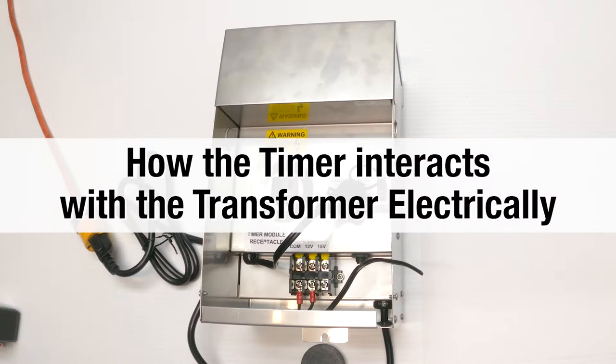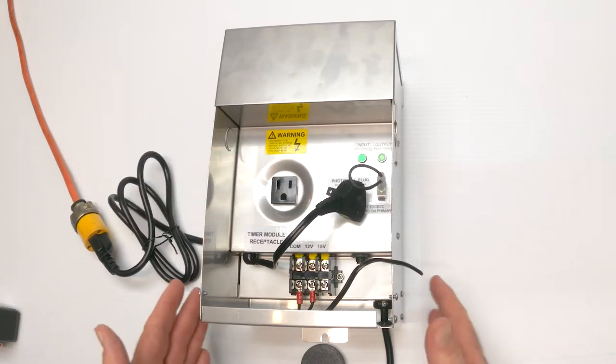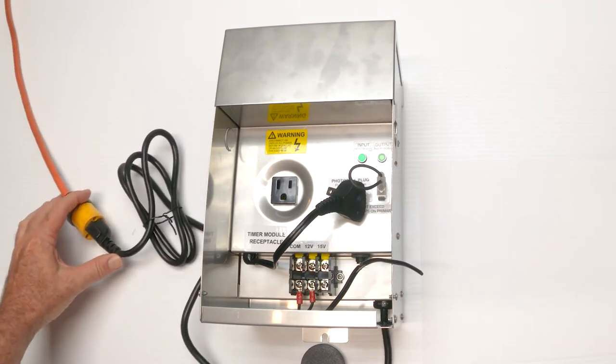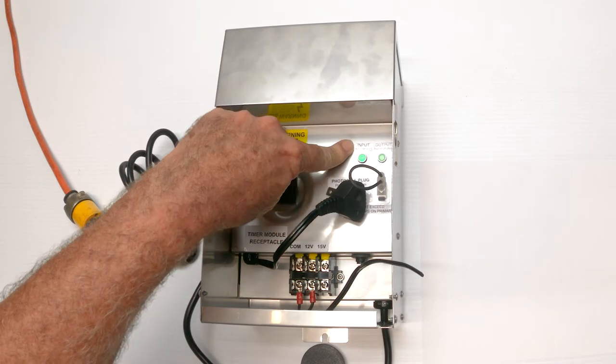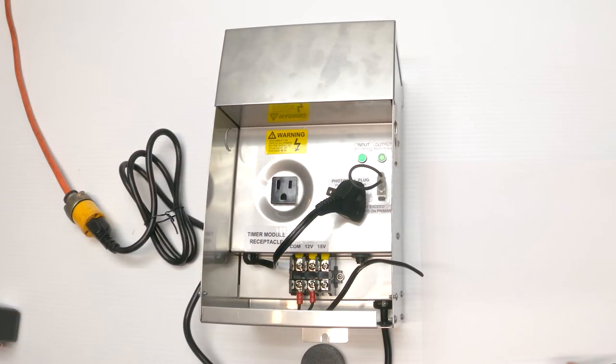In this first section, we look at how the timer interacts with the transformer electrically. So this transformer is plugged in, it's plugged into this extension cord. And I know there's power flowing into this box because the input indicator light is on. That tells us we have power moving in.